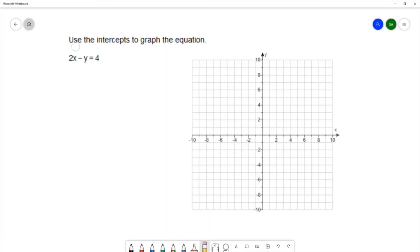In this question, we want to use the intercepts to graph the equation. I'll start by finding the x-intercept. The way you find an x-intercept is by letting y equal 0. This would give 2x minus 0 equals 4 when I substitute a 0 in for y. 2x minus 0 is 2x, and I can divide both sides by 2 to get x equals 2. I have an x-intercept at the ordered pair 2, 0.